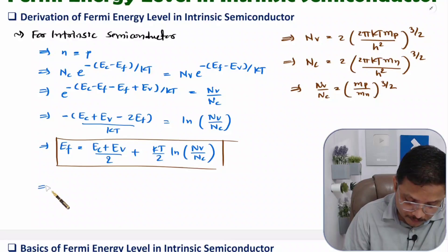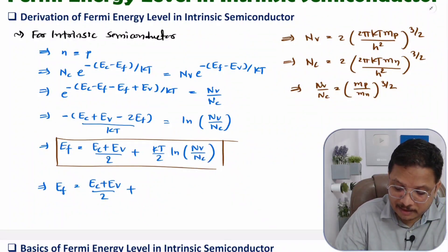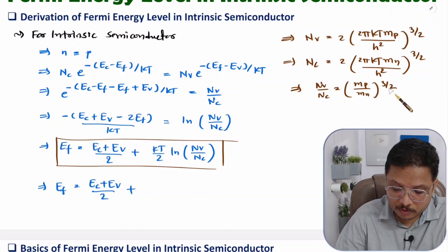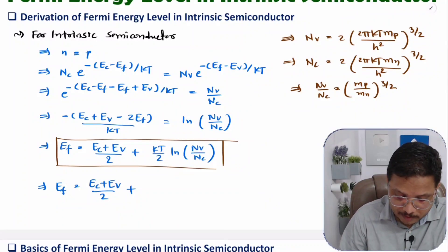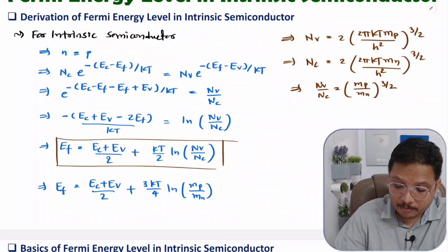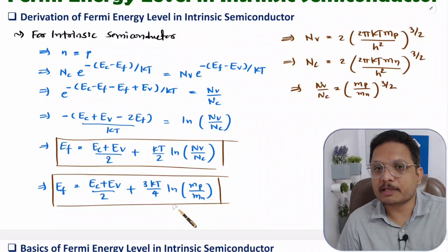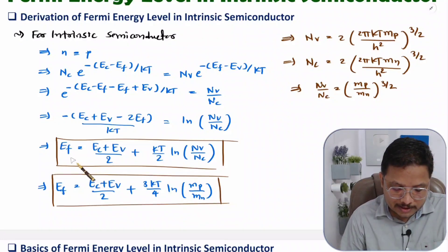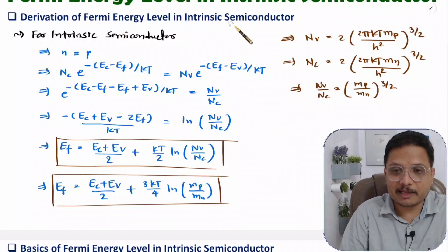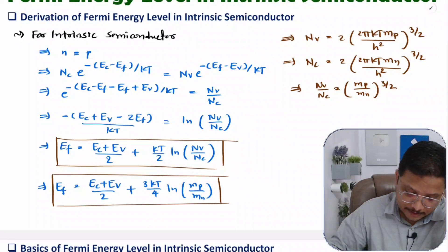So the Fermi energy in the second form is Ef equals (Ec plus Ev) divided by 2, plus (3KT/4) times ln(Mp/Mn), since the exponent 3/2 comes out in front of the logarithm. These two equations — both forms — are very essential in solving examples. These are the equations for Fermi energy level in intrinsic semiconductor material. Now let us understand two essential key points.